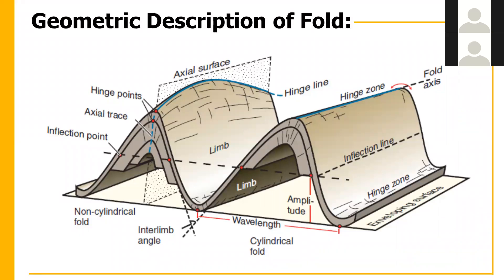After the hinge point, we have the axial trace. The line that joins the hinge points is called the axial trace. If we look at the full axial trace, it divides the fold into two equal limbs — this is called the axial surface.